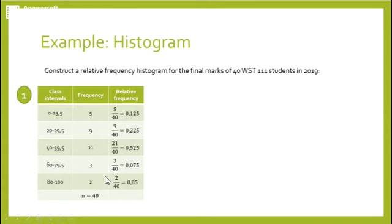We will calculate the relative frequency by taking the frequency and dividing that with the number of observations. We have calculated our relative frequency and we have our frequency. So the next step is to draw the horizontal axis.